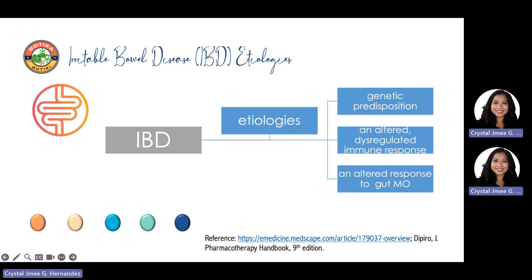Several environmental risk factors have been proposed as contributing to IBD pathogenesis, but the results are inconsistent and the limitations of the studies preclude drawing firm conclusions. The most consistent association described has been smoking, which increases the risk of Crohn's disease. However, current smoking protects against ulcerative colitis, whereas former smoking increases the risk of ulcerative colitis. Dietary factors have also been inconsistently described; in some studies, high fiber intake and high intake of fruits and vegetables appear protective against IBD.